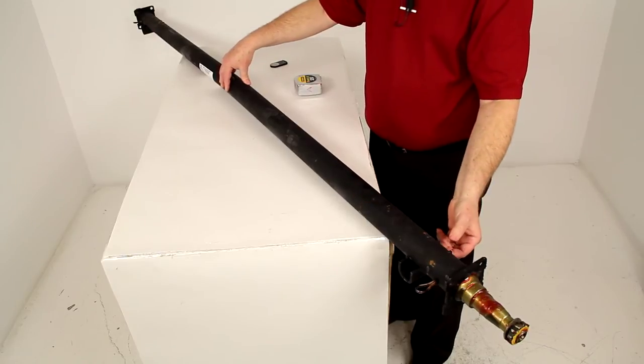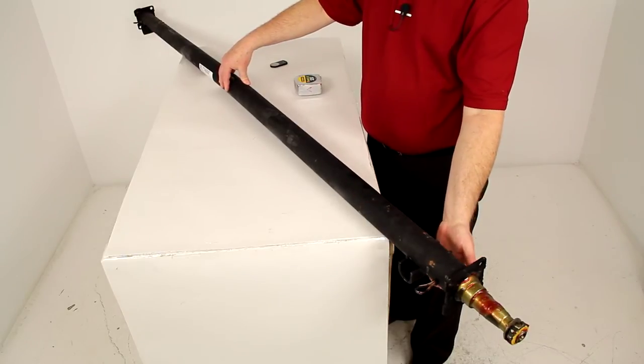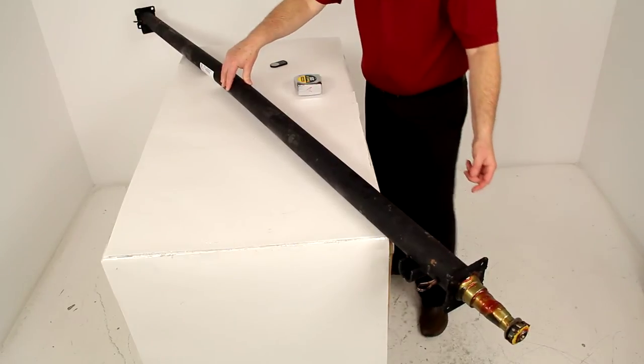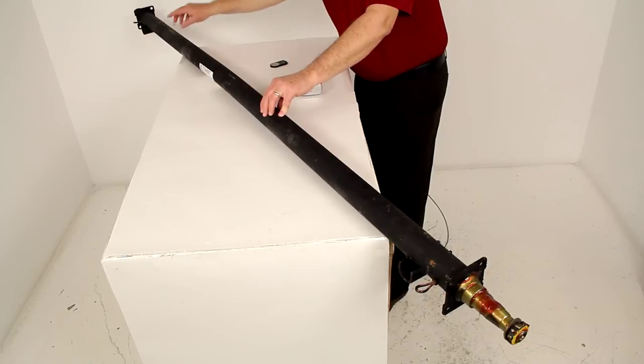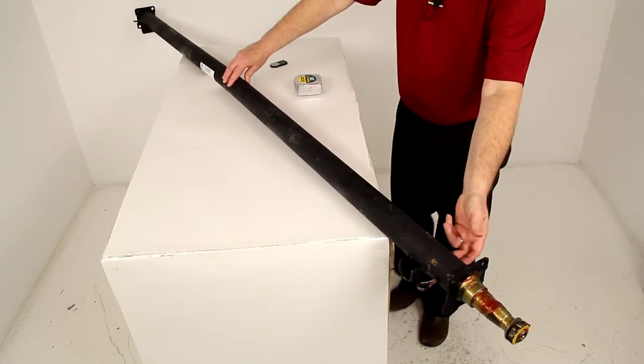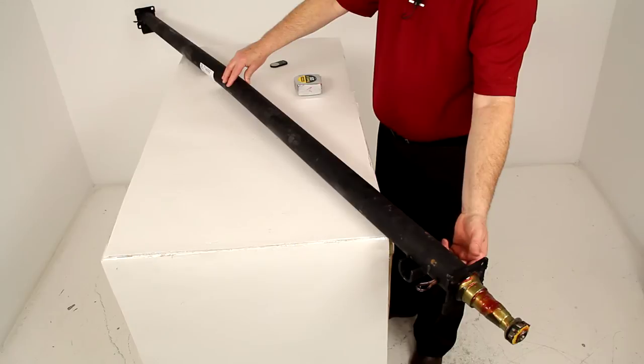It is an underslung design. Basically the spring seats, the one right here, you can see that seat right here. And then there's one on this end. Basically they are welded to the underside of the axle for mounting your leaf springs to.